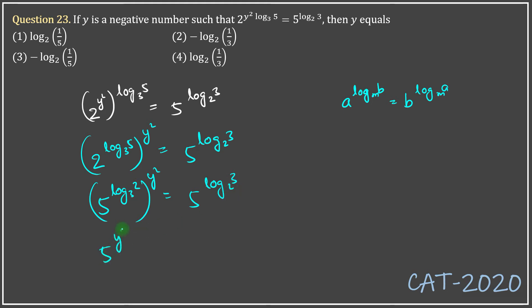So that means, 5 to the power y square log 2 to the base 3 equals 5 to the power log 3 to the base 2.